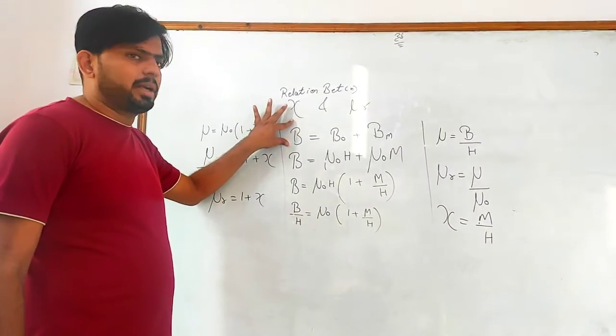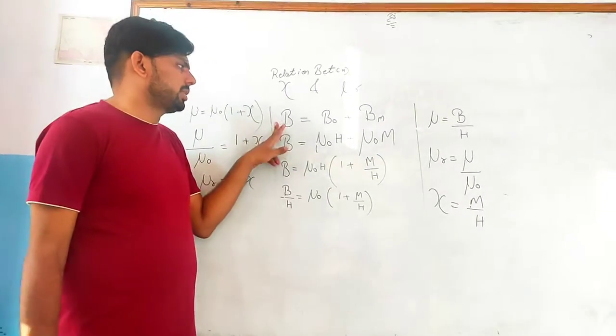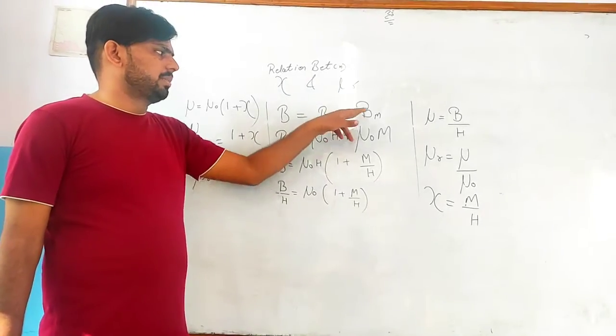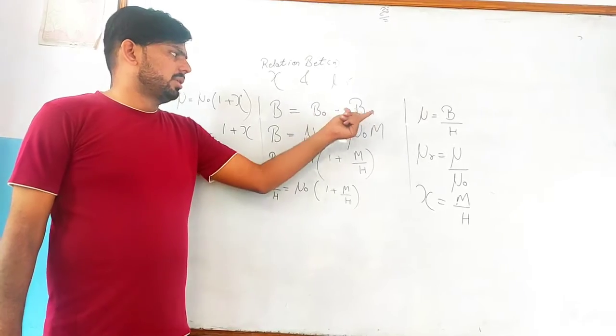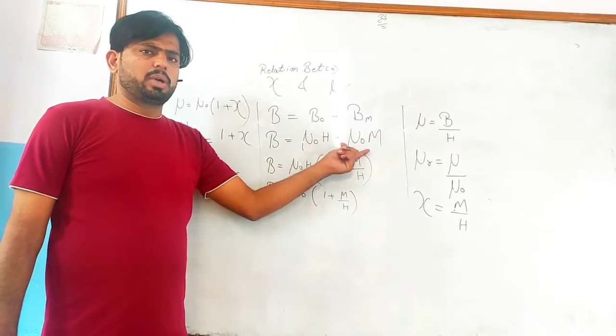What is the formula of total magnetic induction? B equals B not plus BM. B not kitna hooga? Mu not H. BM kitna hooga? Mu not M.